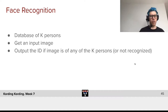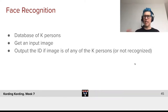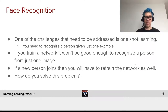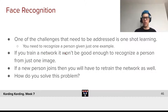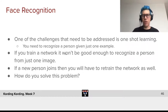ConvNets are being used for face recognition. Given a database of K persons and an input image, the goal is to identify which of the K people appears, or say that person is not in there. We want one-shot learning — I can't give you a thousand images of one person; instead, I want you to generalize from just one photo. If a new person joins, you'd have to retrain the whole ConvNet. So instead of learning to recognize, we want to learn a similarity function and solve one-shot learning outside of the ConvNet.